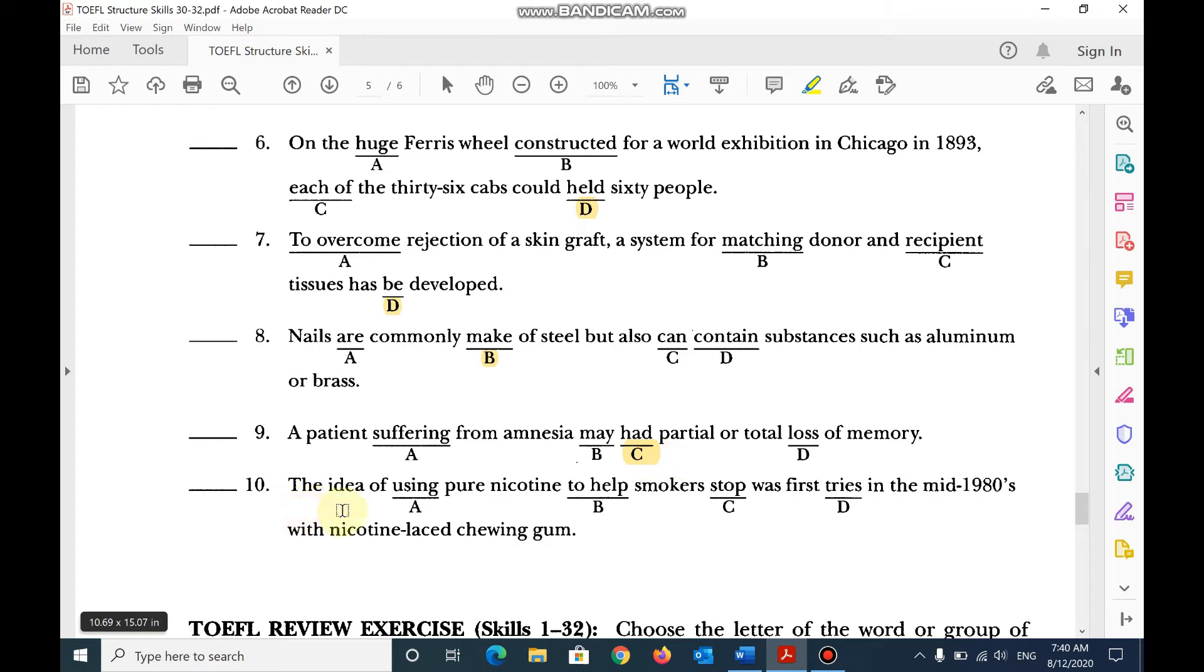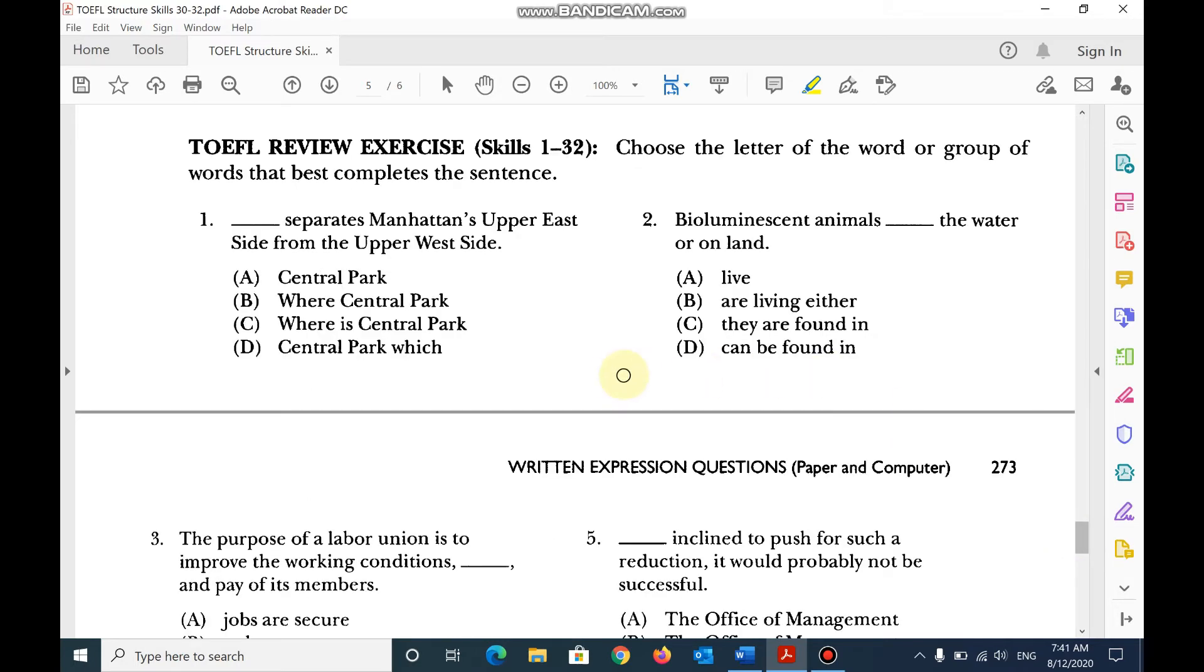Number 10, the idea of using pure nicotine, of using gerund, to help smokers stop, was first tried, passive. Next, review exercise, skills 1 to 32.